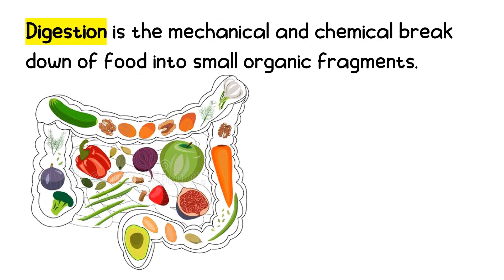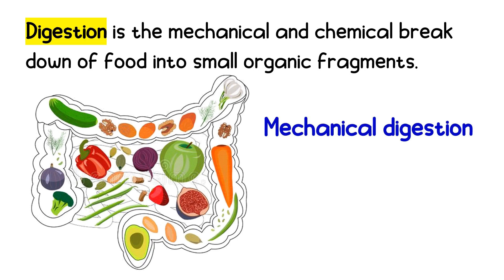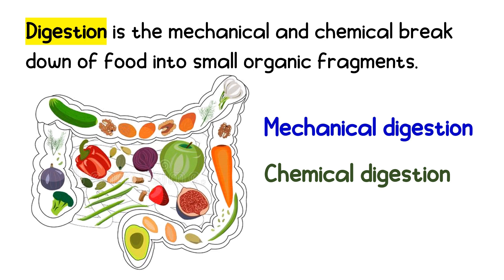Digestion is the mechanical and chemical breakdown of food into small organic fragments. Mechanical digestion refers to the physical breakdown of large pieces of food into smaller pieces which can subsequently be accessed by digestive enzymes. In chemical digestion, enzymes break down food into the small molecules the body can use. The details of this process and the organs involved will be discussed in the next module.